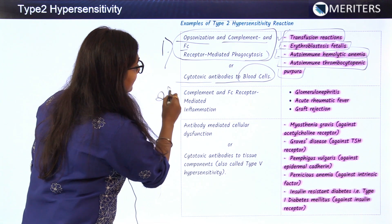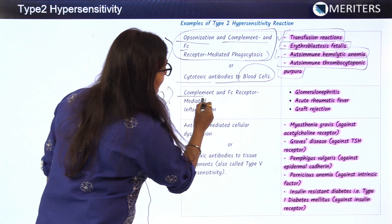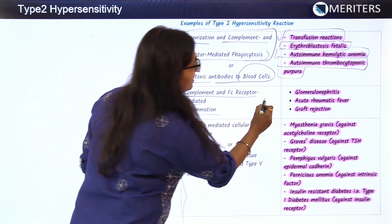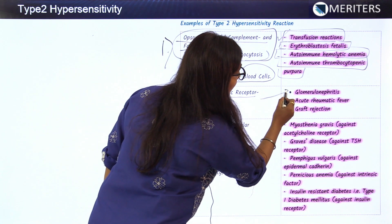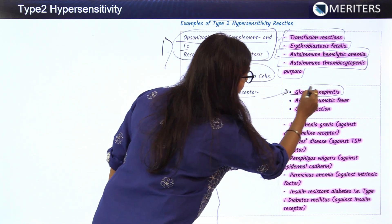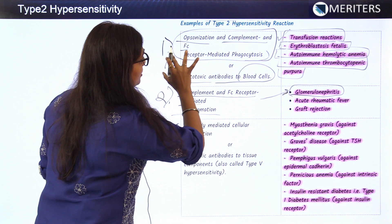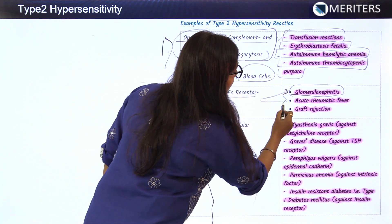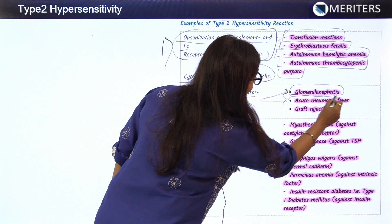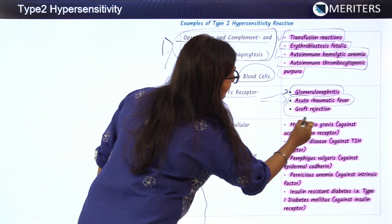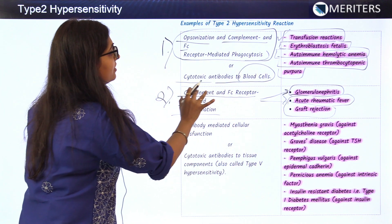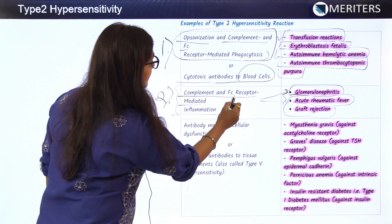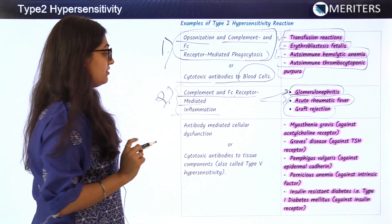The second mechanism is complement cascade and FC receptor-mediated inflammation. Examples to remember here include glomerulonephritis, acute rheumatic fever, and graft rejection — all acting through complement and FC receptor-mediated inflammation.